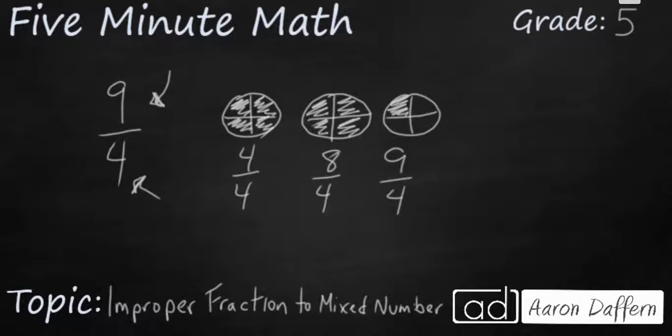So if I wanted to rewrite this as a mixed number, what I need to do is I need to see how many holes I have. I've got 1, 2 holes. So I'm going to write this as a big 2, and then my fraction that's left over here is 1 fourth. So 2 and 1 fourth is the same as 9 fourths. That's just two different ways of looking at it.